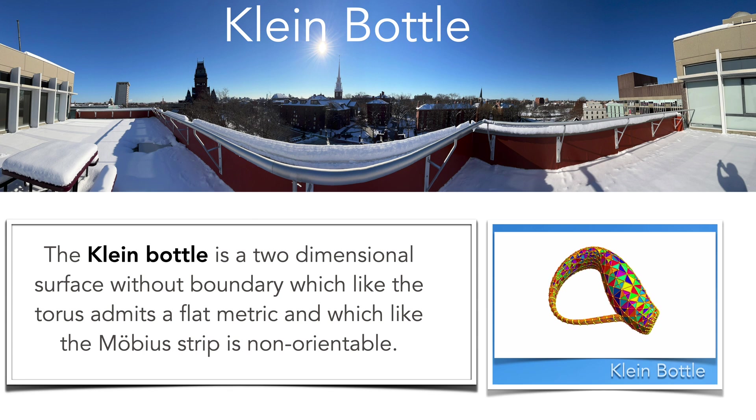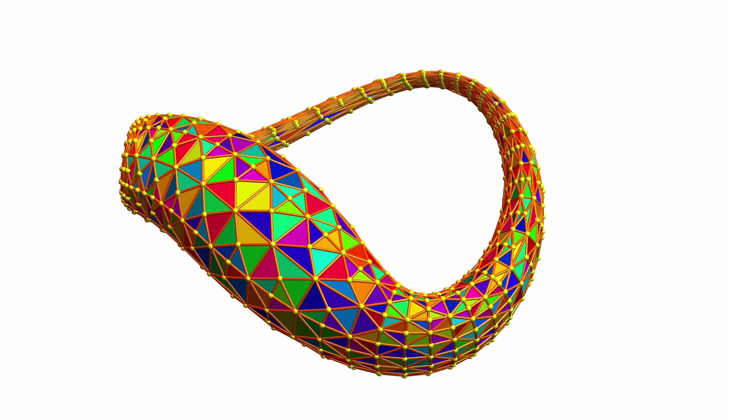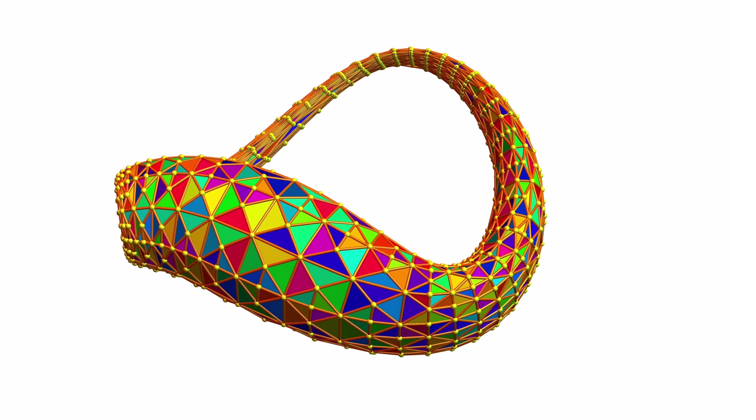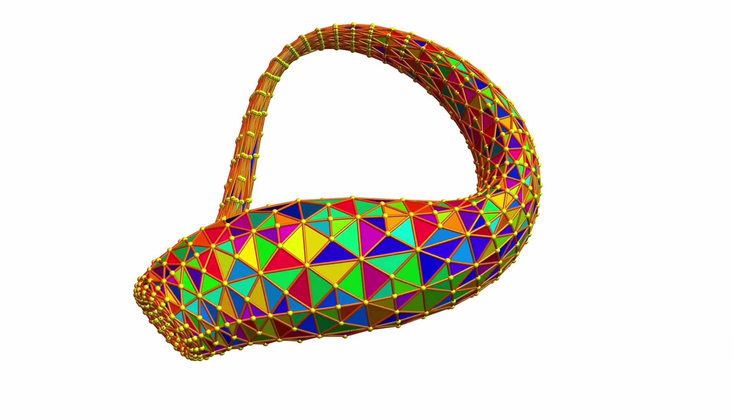Gluing two Möbius strips together produces a Klein bottle. It cannot be embedded in three space without self-intersection but it's a closed surface. It admits still a flat metric obtained by identifying points on the boundary of a square. Here we see the surface embedded in three space rotated around. The triangulation again comes from an explicit parametrization of the surface.